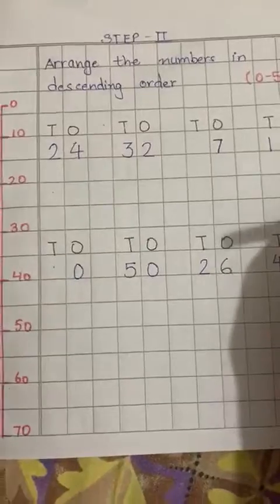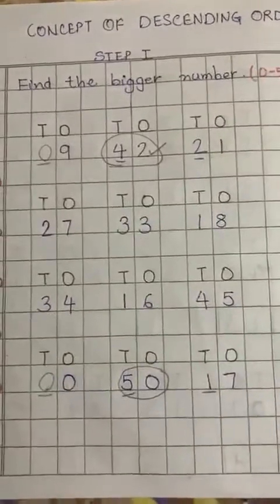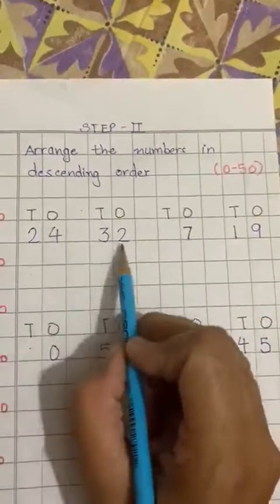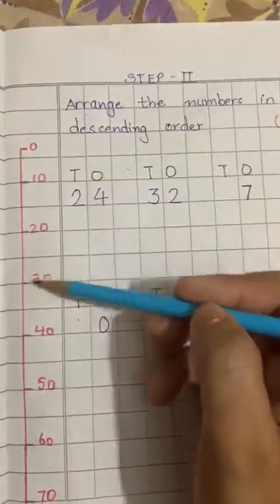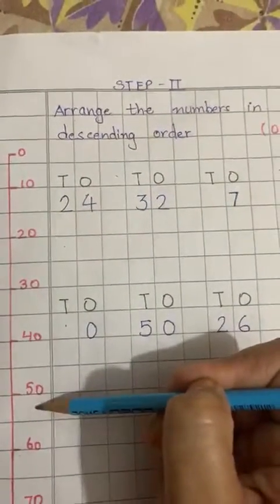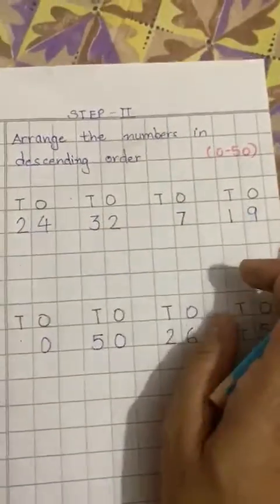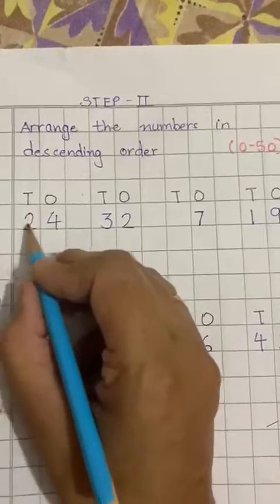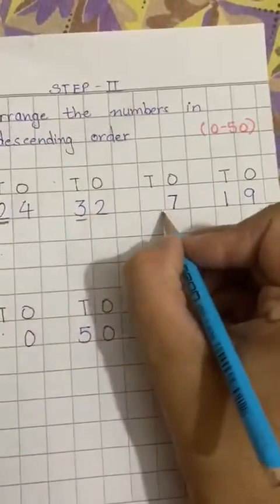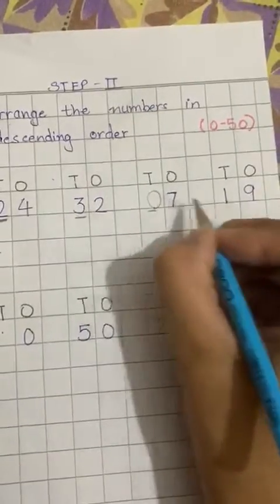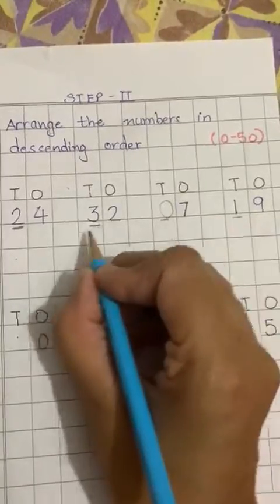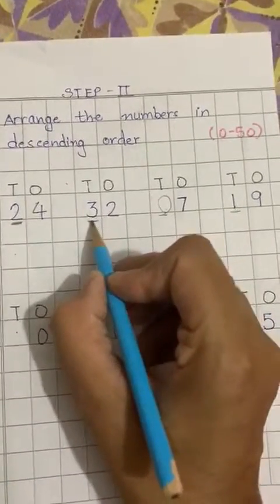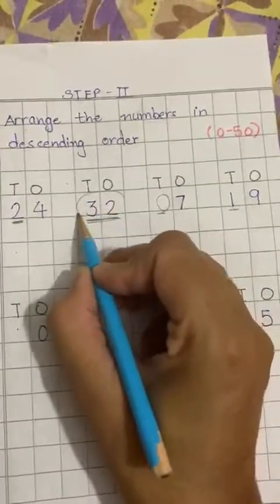Now how do we arrange the numbers in descending order? When you have to arrange numbers in descending order, which comes in our counting number — we will find the number first, then we will see the 10's place. T stands for 10's, O stands for 1's. Here is 10's place: 3, 0, 1. Now tell us which is the biggest number in the 10's place — 0, 1, 2, 3 — 3 is the biggest number.